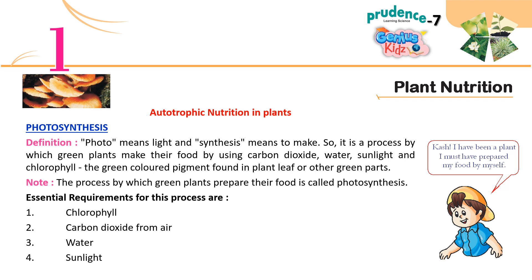Photosynthesis — Definition: 'Photo' means light and 'synthesis' means to make. It is a process by which green plants make their food by using carbon dioxide, water, sunlight, and chlorophyll — the green-coloured pigment found in plant leaves or other green parts. The process by which green plants prepare their food is called photosynthesis. Essential requirements for this process are: 1. Chlorophyll, 2. Carbon dioxide from air, 3. Water, 4. Sunlight.